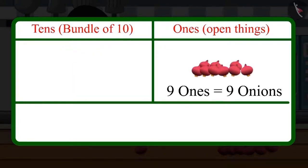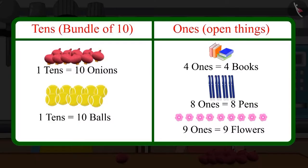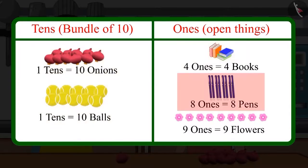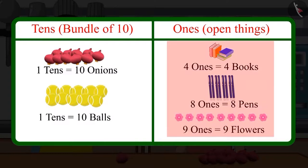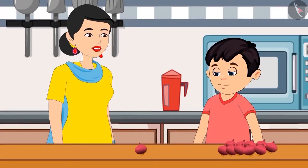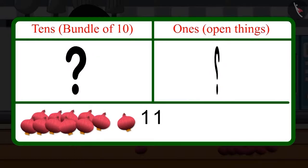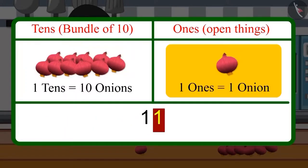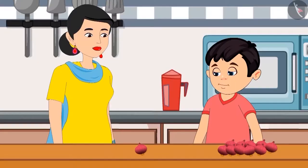Absolutely right Choto! This means that ten onions, ten balls — all things present in a group of ten — make tens, because they are in a group of ten. But four, eight, and nine things, which are less than ten, they are ones and we count them individually. Have you understood? Yes mommy! So now can you tell me how many tens and ones are there in eleven onions? There would be one tens and one ones in eleven onions, isn't it mommy? Yes Choto, you are absolutely right!